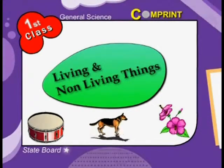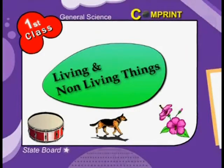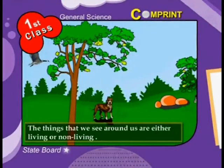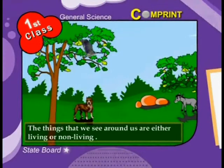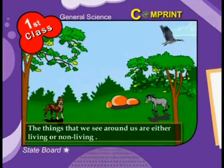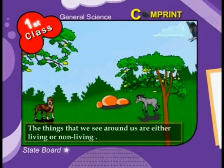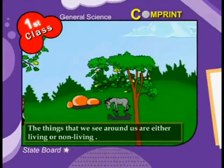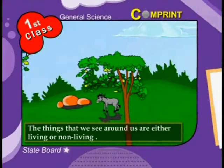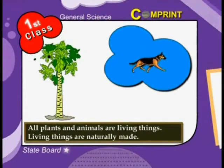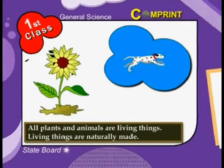Living and non-living things. The things that we see around us are either living or non-living. All plants and animals are living things.